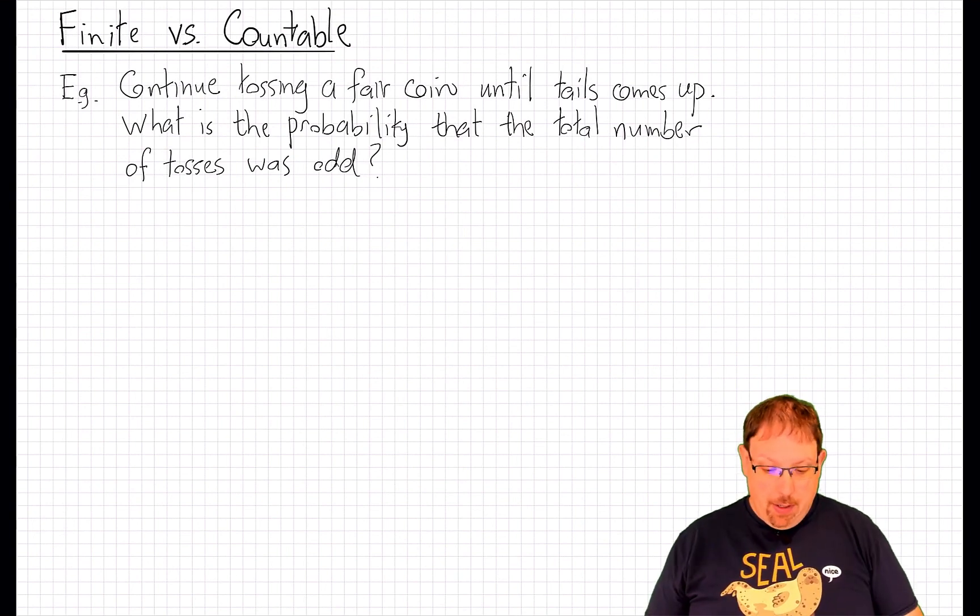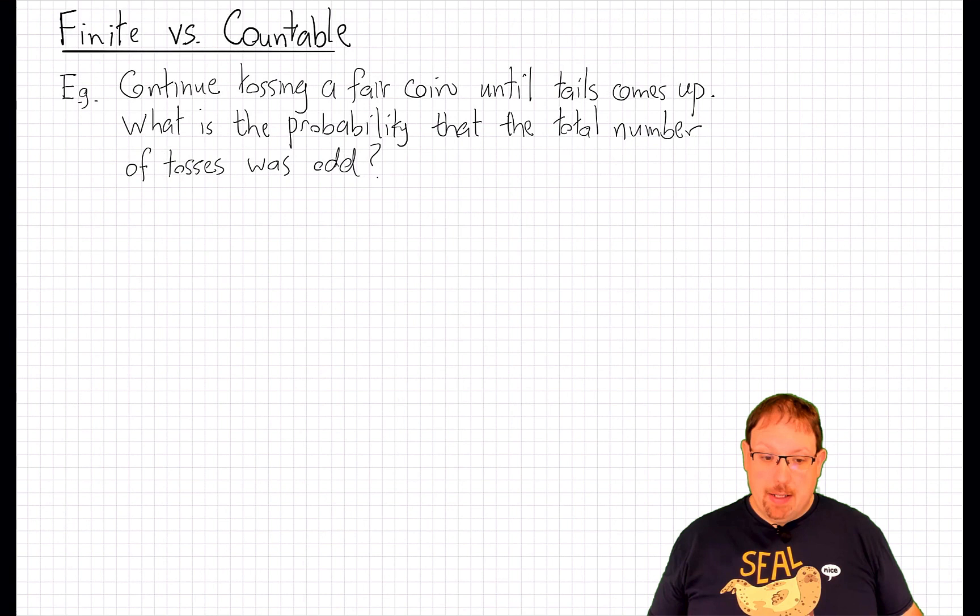Tossing a fair coin. Here's the experiment. I want to take my coin and toss it until tails comes up. Now that might just take one toss with probability 1/2, or it might take two tosses with probability 1/4.